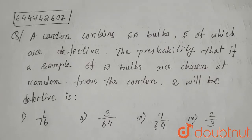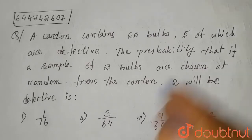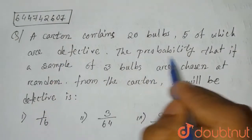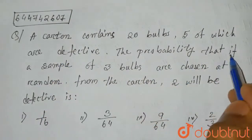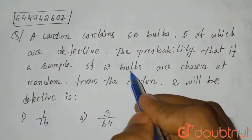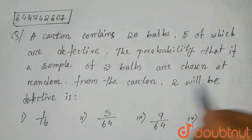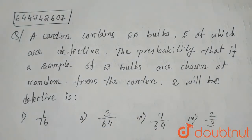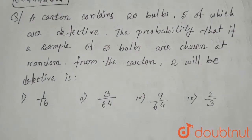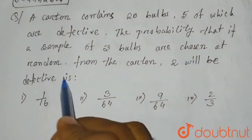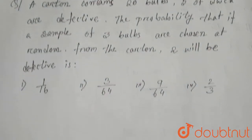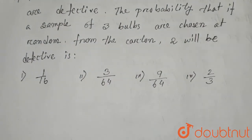Hello everyone. The question is: a carton contains 20 bulbs, five of which are defective. The probability that if a sample of three bulbs are chosen at random from the carton, two will be defective. Since we are choosing three bulbs from the carton at random, the bulb selection is independent.